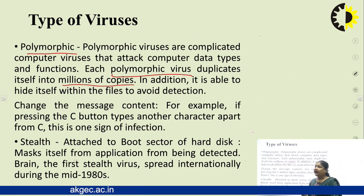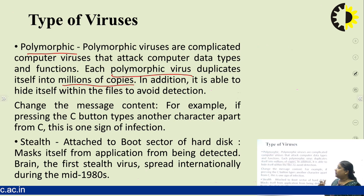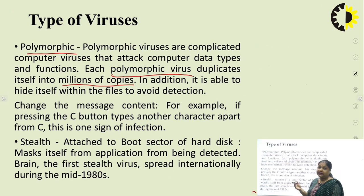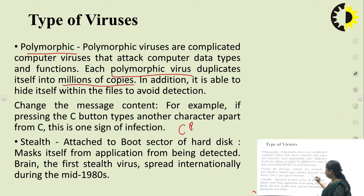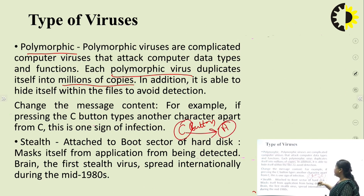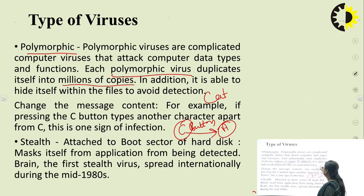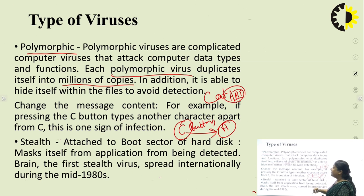Polymorphic viruses hide themselves from antivirus software and other detection tools. They can also change the content of messages — for example, if pressing the C button is supposed to type 'C', the virus may type 'A' instead. So if someone types 'CAT', it could become 'AAT'. The content of messages can be changed through a polymorphic virus.